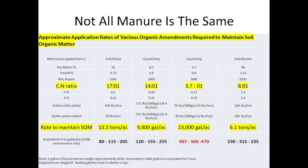Here's a chart showing different types of manures — solid dairy, liquid dairy, liquid hog, and solid broiler — along with their carbon to nitrogen ratios. It shows how many tons or gallons of manure you'd need to apply to maintain your soil organic matter level. The sweet spot numbers around 17 to 1 show it takes 15 tons of solid dairy manure or 9,000 gallons of liquid dairy to maintain soil organic matter.